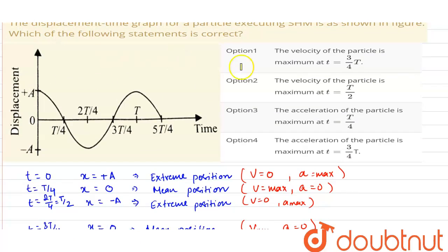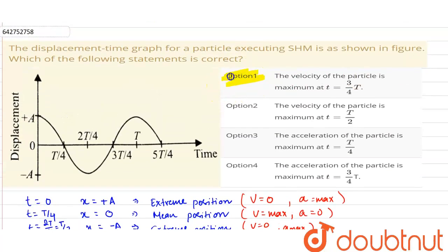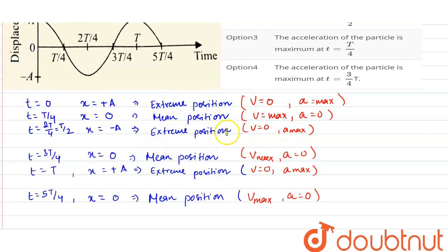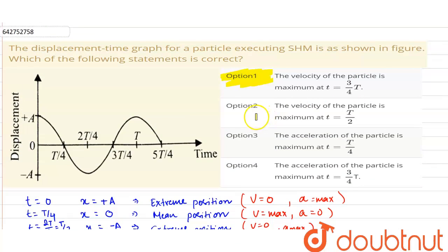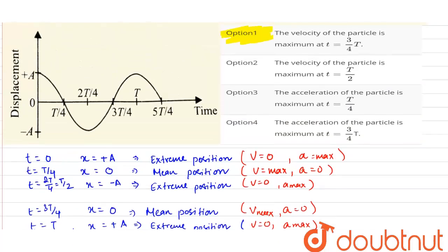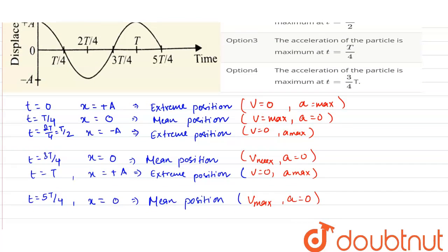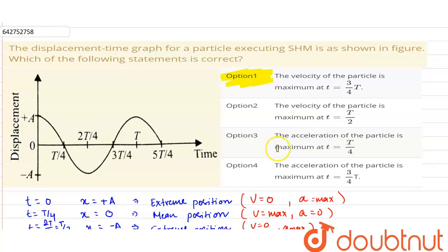From the given options, we can see that the velocity of the particle is maximum at 3T/4. At 3T/4, velocity is maximum and acceleration is 0, so option 1 is the correct option. Option 2 says velocity is maximum at T/2, but at T/2 the particle is at its extreme position, so velocity is 0 — option 2 is incorrect. Option 3 says acceleration is maximum at T/4, but at T/4 the particle is at the mean position, so acceleration is 0 — option 3 is also incorrect. Option 4 says acceleration is maximum at 3T/4, but at 3T/4 the particle is at the mean position, so acceleration is again 0 — option 4 is also incorrect. Therefore, the only correct option is option 1.